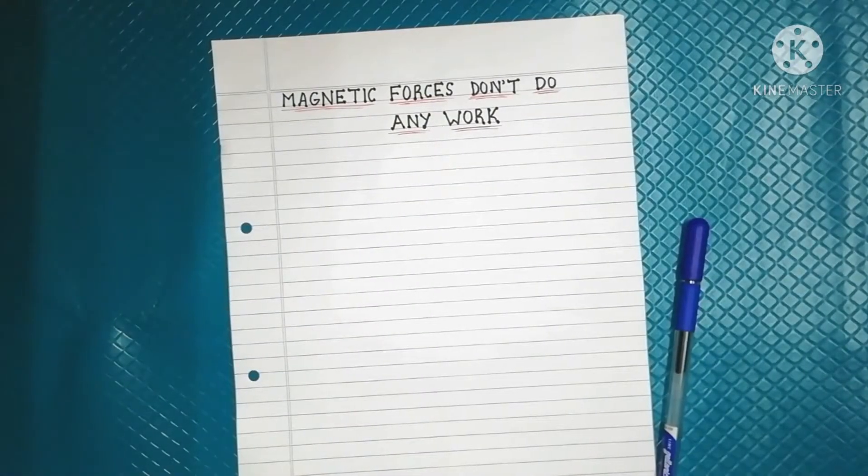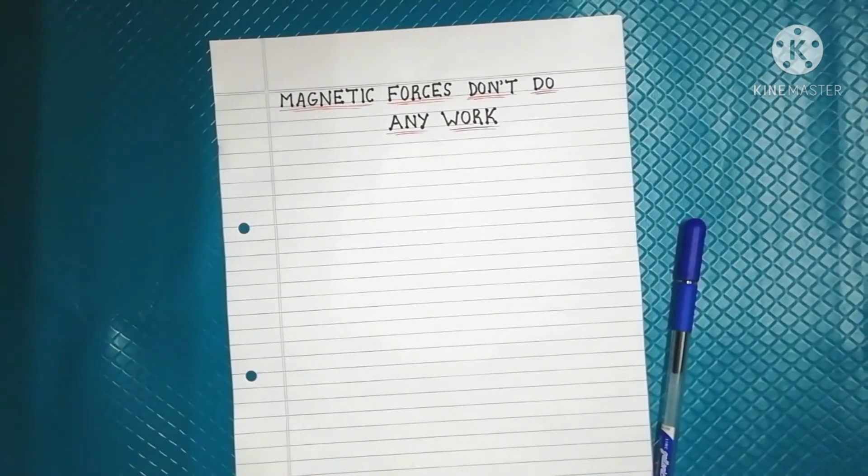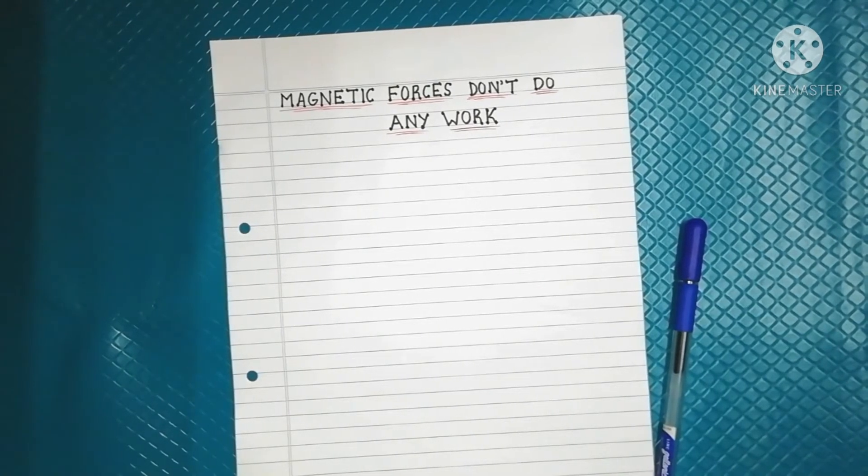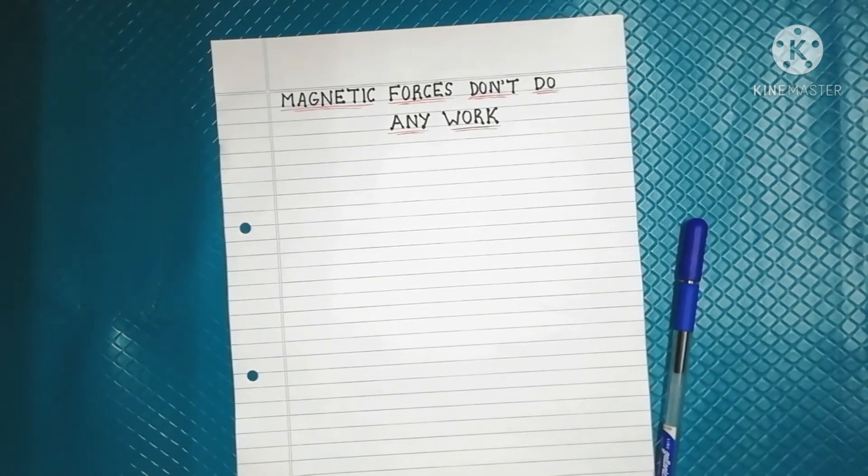Hello everyone, hope you all are doing good. In this video we are going to prove that magnetic forces don't do any work, that is the dW value is equal to zero for magnetic forces. Magnetic force on a moving charged particle is perpendicular to its velocity, thus the work done by magnetic force is zero.